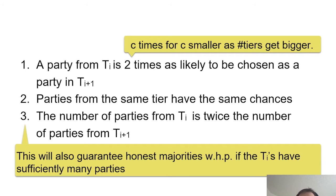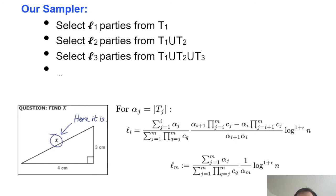Our sampling algorithm selects a number L1 from the highest reputation tier, then another number L2 from the union of the top two tiers, replacing duplicates, then L3 from the union of the top three tiers, and so on. L1, L2, L3 are computed to satisfy certain conditions. By doing some algebra, these equations give us exactly what we need: the total committee size is polylog (log to the 1+epsilon), while satisfying all reputation fairness properties.